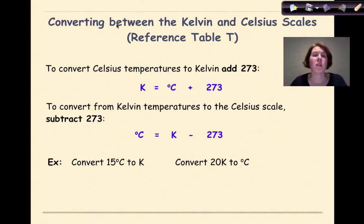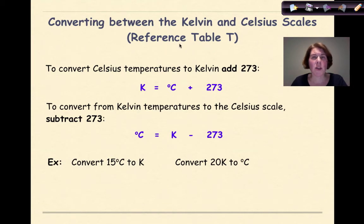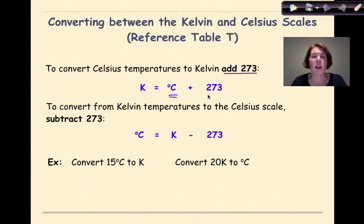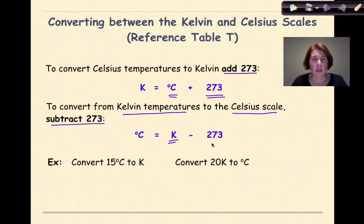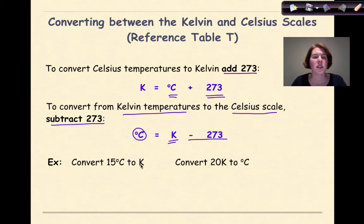One skill you need is how to convert between Kelvin and Celsius. This formula is on Reference Table T. To convert Celsius to Kelvin, add 273: K = °C + 273. To convert Kelvin to Celsius, subtract 273: °C = K − 273.